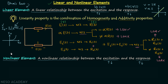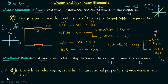When we have a non-linear element, either the law of homogeneity or additivity fails. One important point to remember: every linear element must exhibit the bi-directional property, but the vice versa is not true — a bi-directional element may or may not be linear.